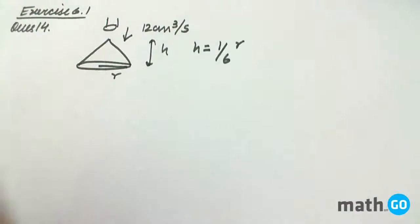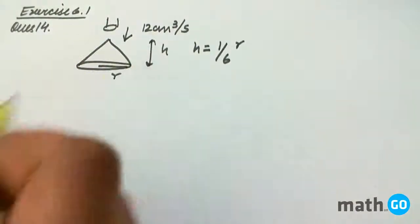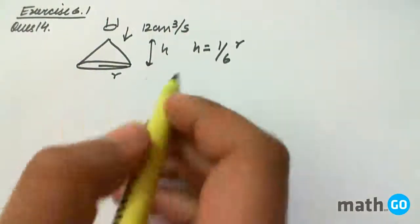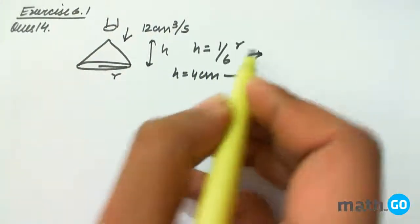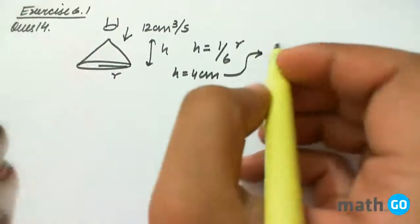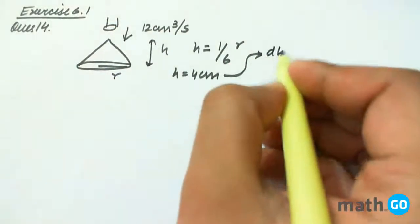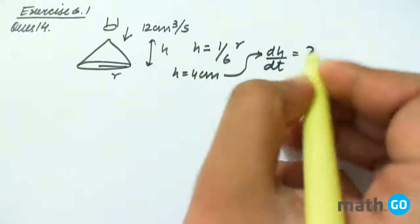And we have to find out how fast the height is increasing when the height is 4 centimeter. We are given height equals to 4 centimeter. Here is the point where we want to know what is the speed at which it is increasing. So we have to find dh by dt.